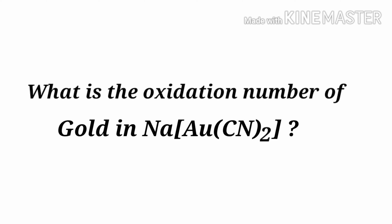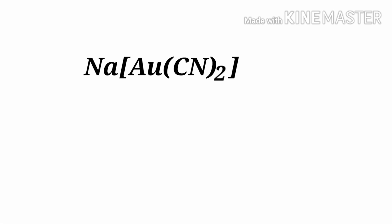What is the oxidation number of gold in sodium dicyanoaurate? We can use the oxidation number rules to determine oxidation numbers. Sodium dicyanoaurate is a neutral compound with an overall oxidation number of zero. Therefore, we know that the sum of the oxidation numbers of all atoms is equal to zero.